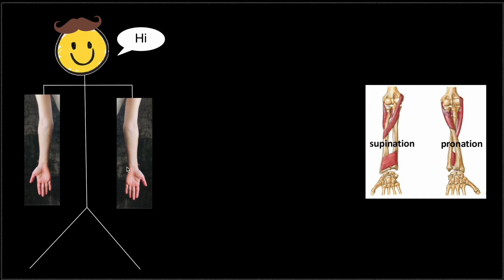In anatomical position, the pinky finger is always at the medial side of the body — closest to the midline — and the thumb is always at the lateral side. The ulna is at the side of the pinky finger, meaning it is always at the medial side of the body, and the radius is at the side of the thumb and therefore at the lateral side.